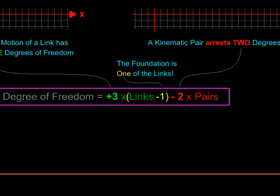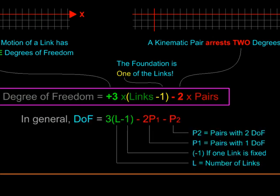Finally, we generalize our formula to include pairs which have two degrees of freedom. So if P2 is the total number of such pairs which remove only one degree of freedom, our final formula looks like this.